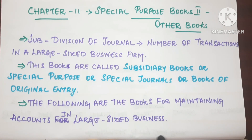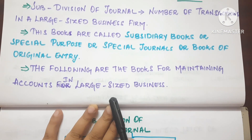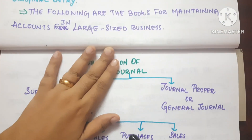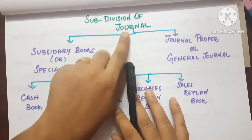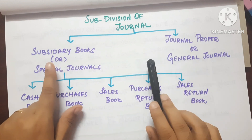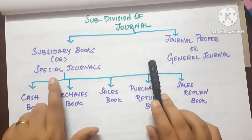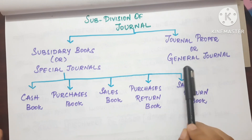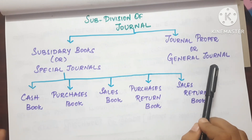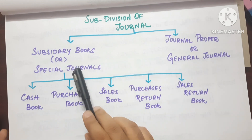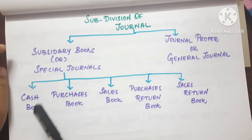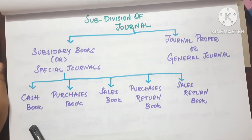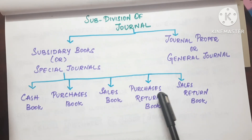The following books are for maintaining accounts in large-size businesses. The sub-division of journal includes Subsidiary Books, which are also called the Special Journal or General Journal. There are 5 types: Cash Book, Purchase Book, Sales Book, Purchase Return, and Sales Return.